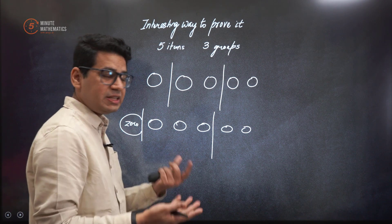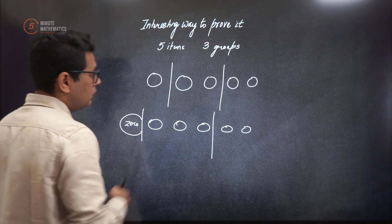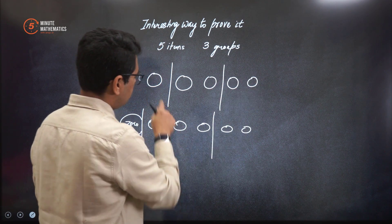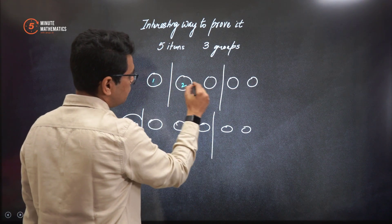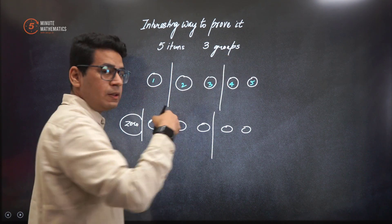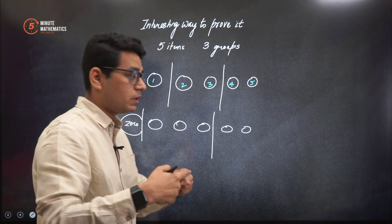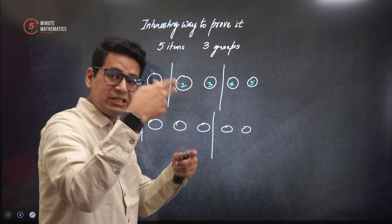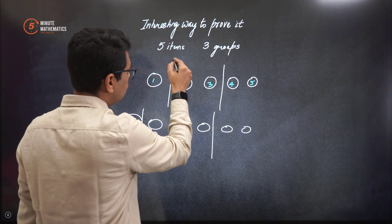Now notice, very very interesting. How many total you have got? These were 5 balls which we started with. You wanted to divide in 3, so for that, humne kitne scissor points bana? We made 2 scissor points. How many are there in total?